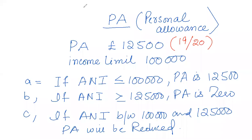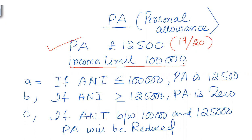Personal allowance is a type of tax-exempt income. For the tax year 19/20, the personal allowance value is £12,500. This £12,500 is available for each individual — separately for a husband and separately for a wife. However, there is an income limit of £100,000 in order to receive this full £12,500.